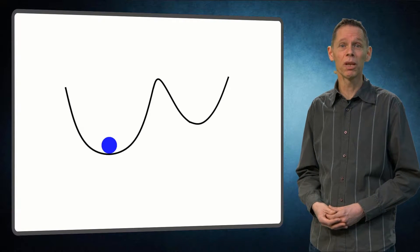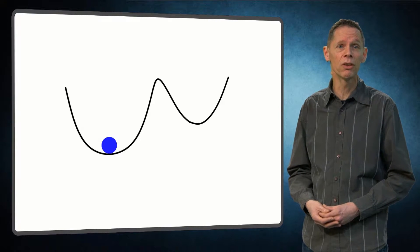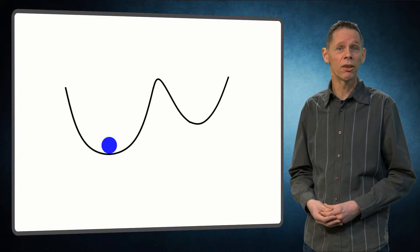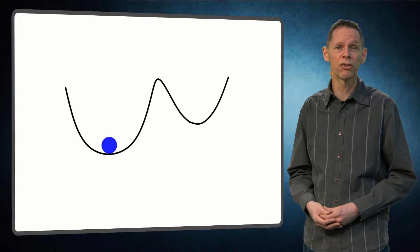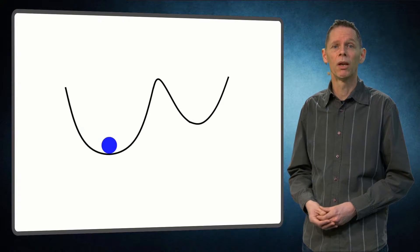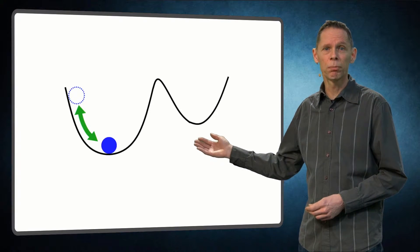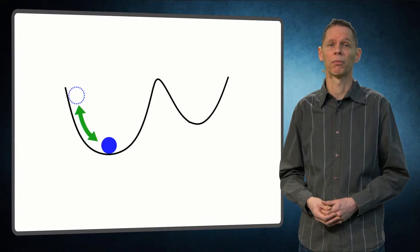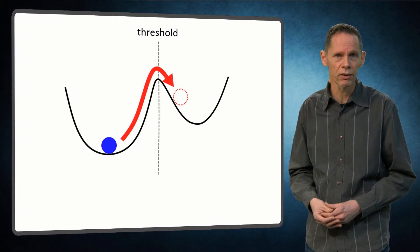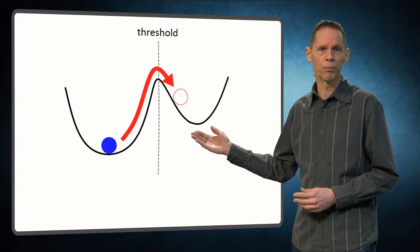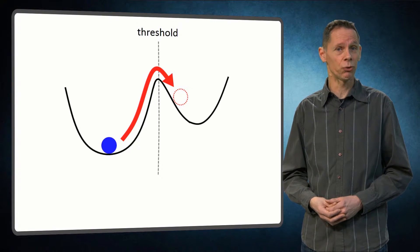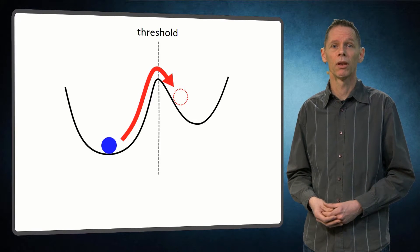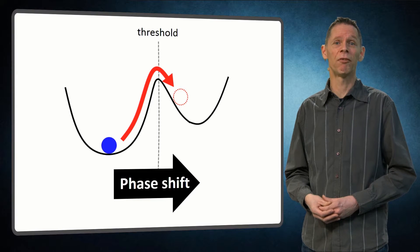A resilient ecosystem is able to bounce back to the original ecosystem state after a foreseeable disturbance. This ecological resilience can be envisaged as a ball in a bowl. With each disturbance, the ball is pushed out of equilibrium, but will roll back to its original position. However, if this ball is pushed too hard, it will be pushed out of the bowl. In analogy, if the disturbance is too strong, the ecosystem cannot recover and will shift towards another state. This is also called a phase shift.